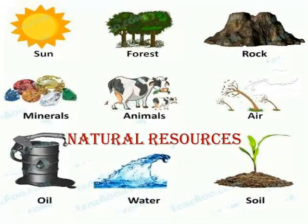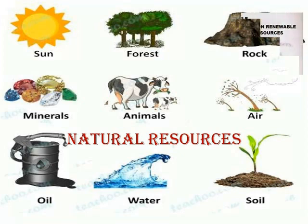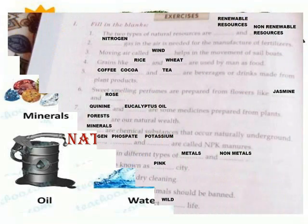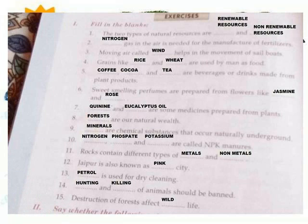5th Standard Science Lesson 9: Resources. Exercise bookback, fill in the blank. The two types of natural resources are renewable resources and non-renewable resources.